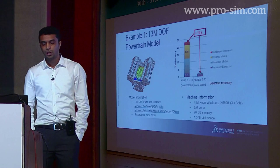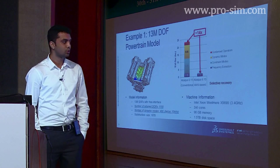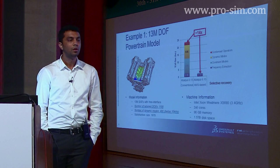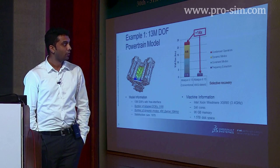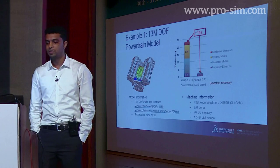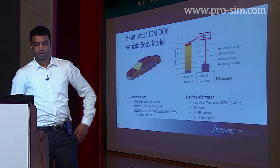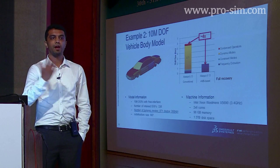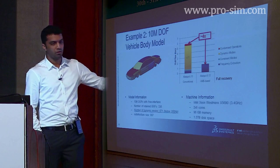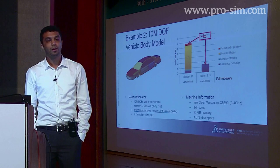Here are a few examples. For a powertrain model, the conventional Lanczos eigen solver versus the AMS eigen solver — you can see the kind of speed improvement: 14x speedup using AMS. With selective recovery, if you're not interested in outputs for all regions of the geometry, you can request only selective outputs. If you go with full recovery — extracting all outputs for all geometries and substructures — the speed does drop, but it's still far superior to the conventional Lanczos eigen solver.